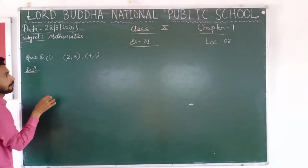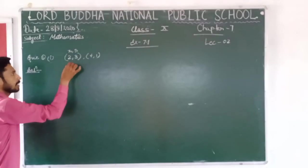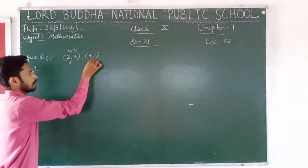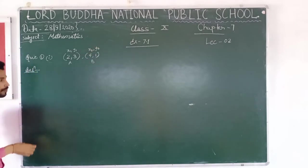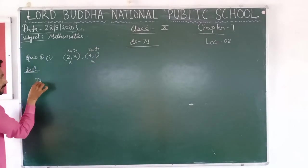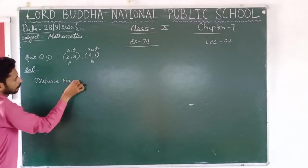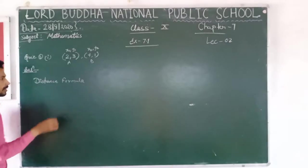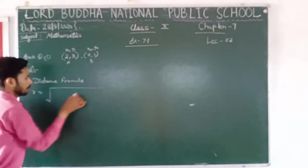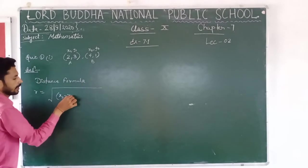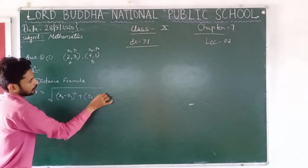The solution of this question: take the first point as x1 comma y1, and this will be point A. Another point is B, whose coordinates are x2 comma y2. Now, the distance formula: r equals to square root of (x2 minus x1) whole square plus (y2 minus y1) whole square.